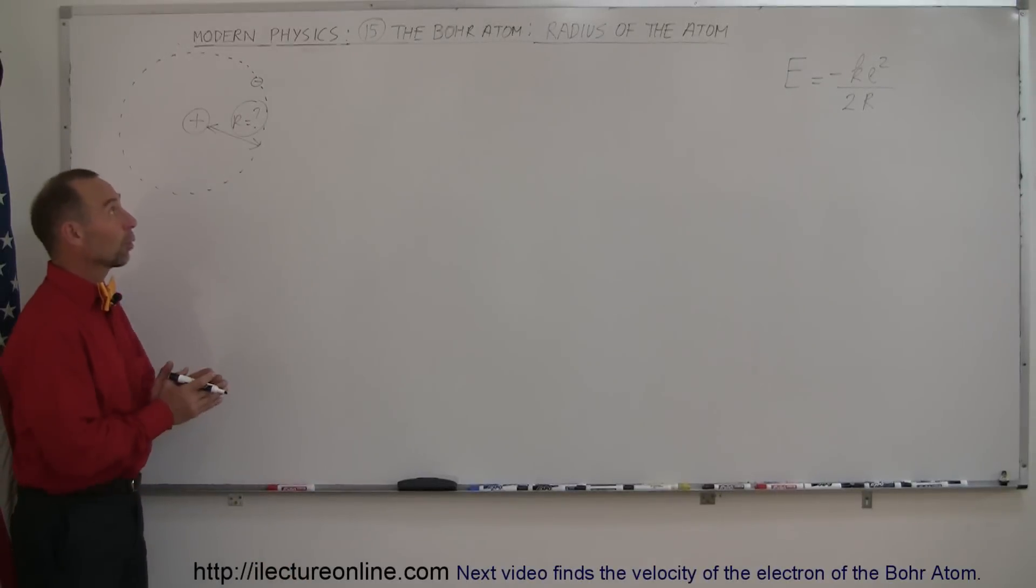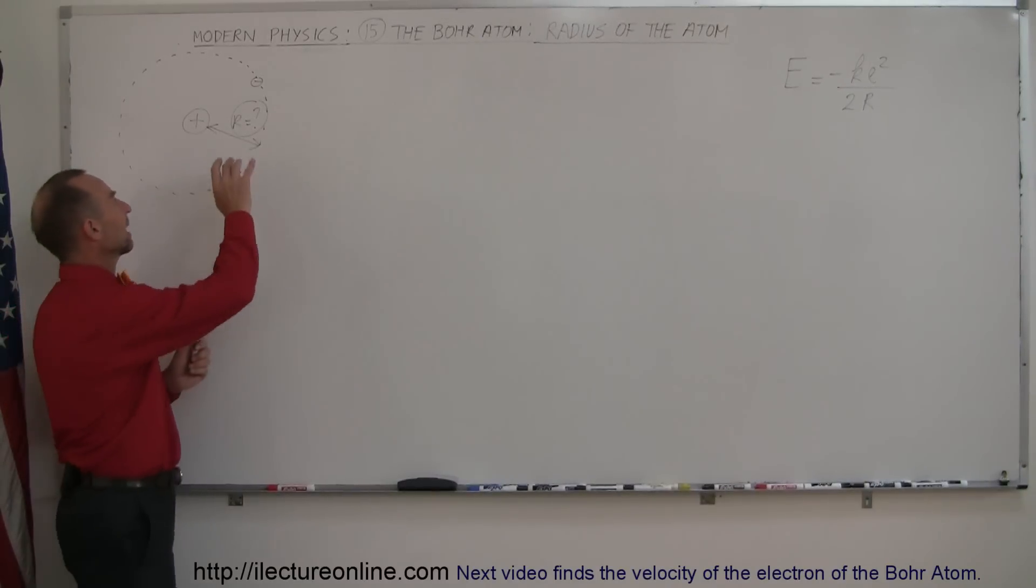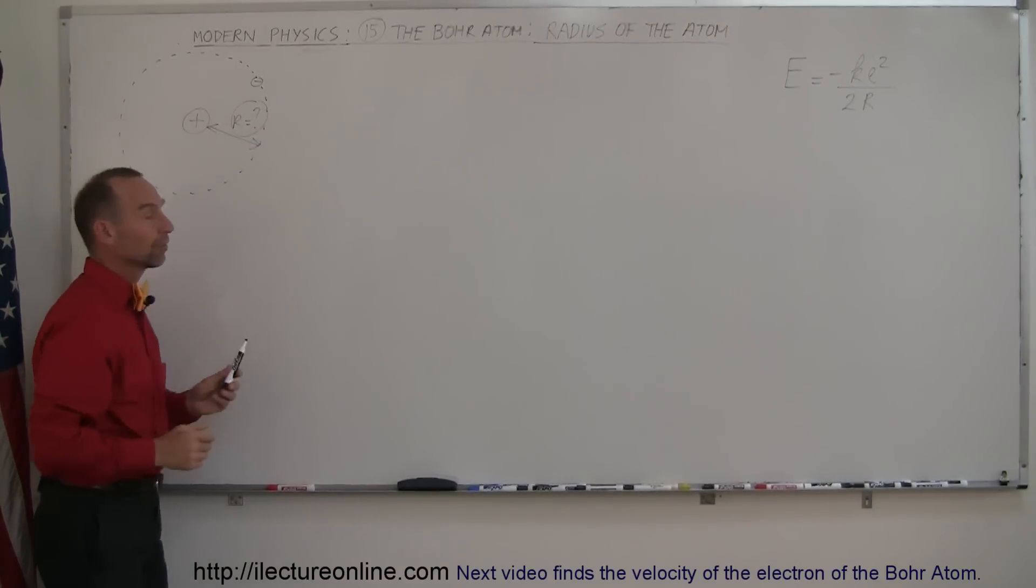In this next video we're going to explore in the Bohr atom how we can find its radius. That was back about 100, 120 years ago - this was a very big challenge. How big is an atom? The size of the atom is determined by the radius of the orbit of the electron.